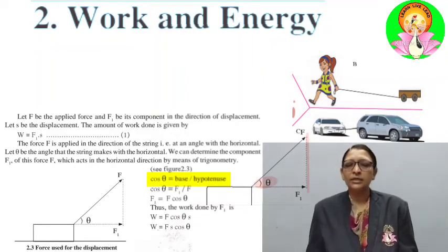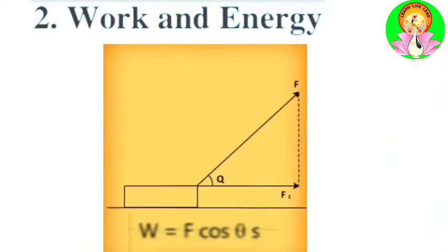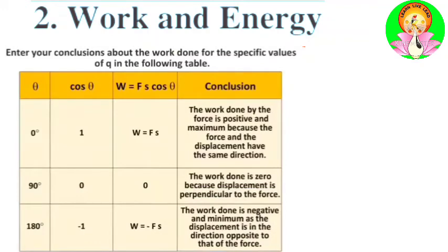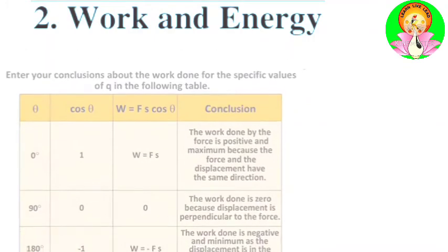Work done by force F is equal to F cos θ × S. When theta is 0°, cos θ = 1, and W = F × S - the work done is positive and maximum because force and displacement are in the same direction. When theta is 90°, cos θ = 0, so work done is zero because displacement is perpendicular to the force. When theta is 180°, cos θ = -1, and W = -F × S - the work done is negative and minimum as displacement is opposite to the force applied.